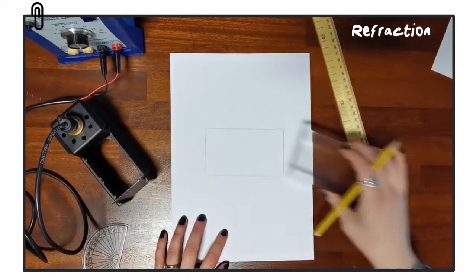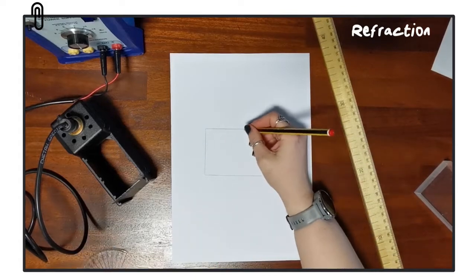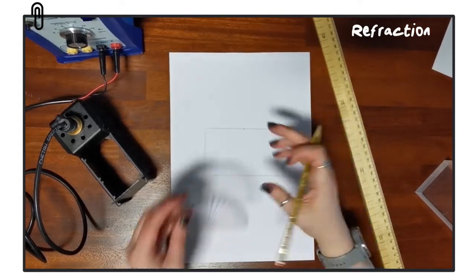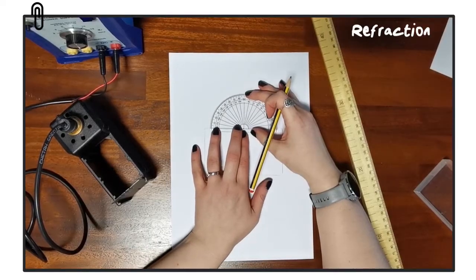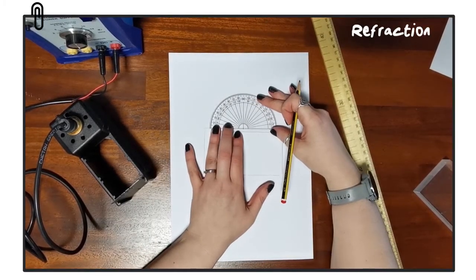Now we're going to remove the block and we're going to add in the normal. So first we choose a point along the long edge of the block, and then to that point we will draw the normal, which is 90 degrees to the boundary.